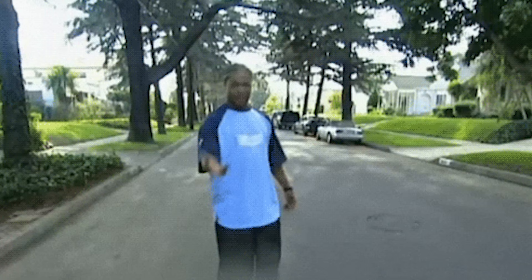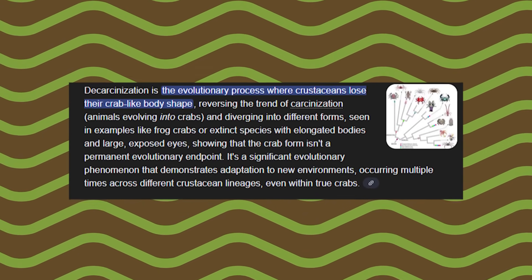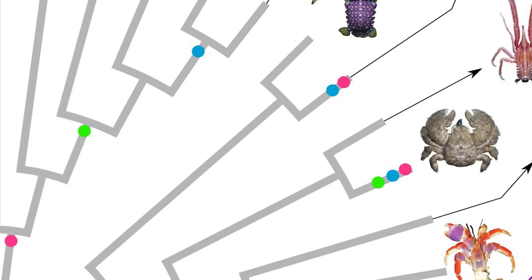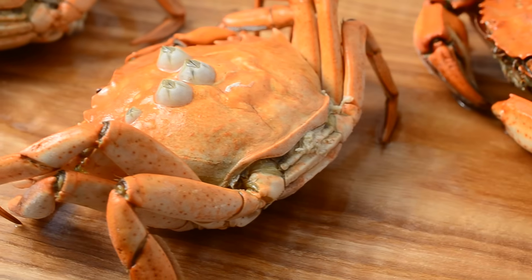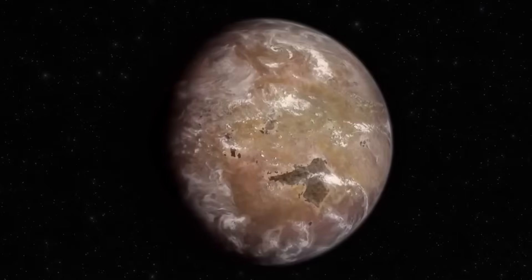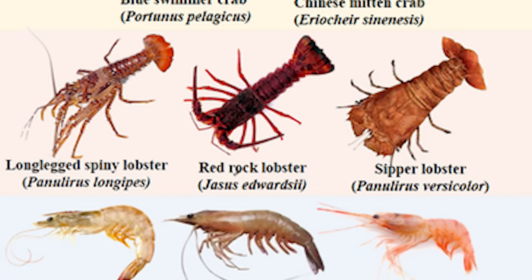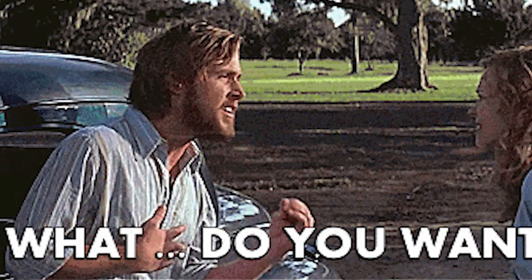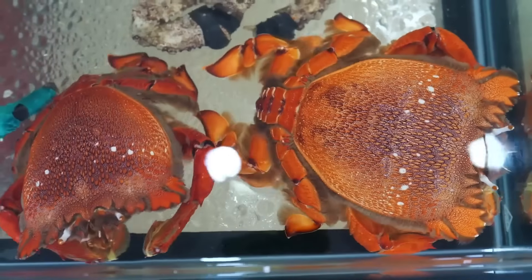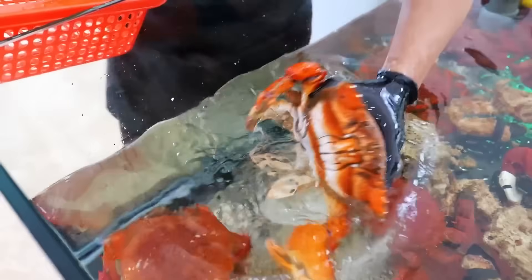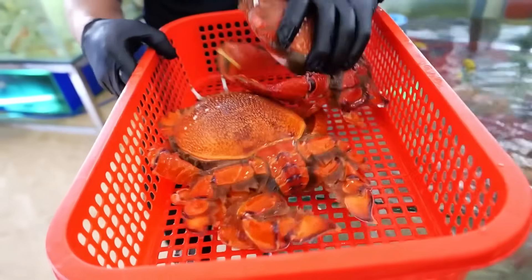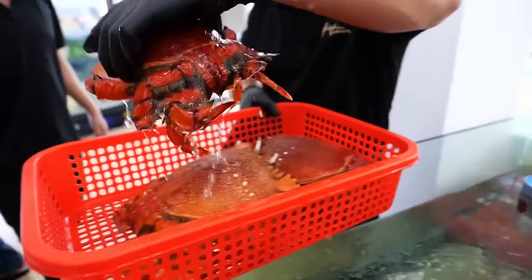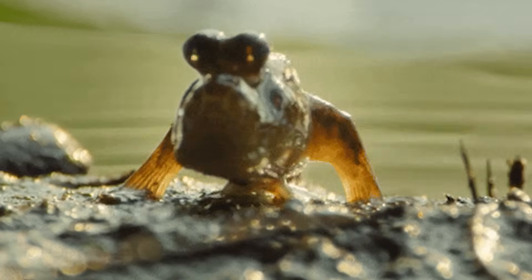But apparently evolution also unbuilds crabs. Decarcinization — yes, another real word scientists had to invent — is exactly what it sounds like. Some crabs evolved from fully crabby ancestors, then over millions of years just started undoing it, stretching back out into longer shapes with visible tails, basically running the carcinization process in reverse. The best example is frog crabs, which are still technically true crabs by ancestry, but if you look at one you'd think somebody left a crab in a taffy puller — they're elongated, their tails stick out, and they've lost that classic flat round shape.